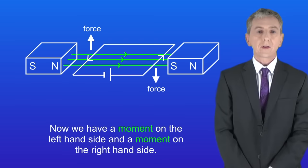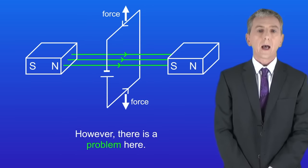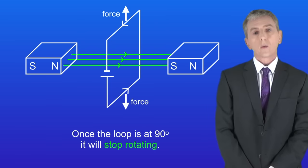So now we've got a moment on the left hand side and a moment on the right hand side. This means that the loop will rotate in the clockwise direction. However there is a problem here. Once the loop's at 90 degrees it will stop rotating.